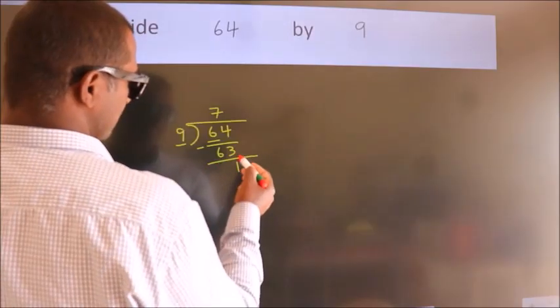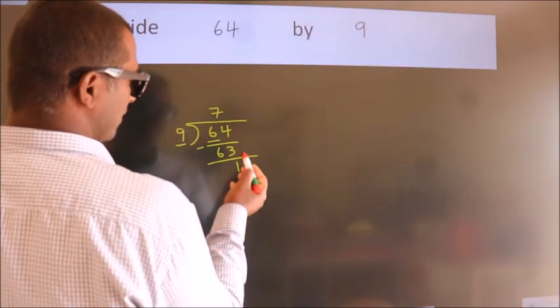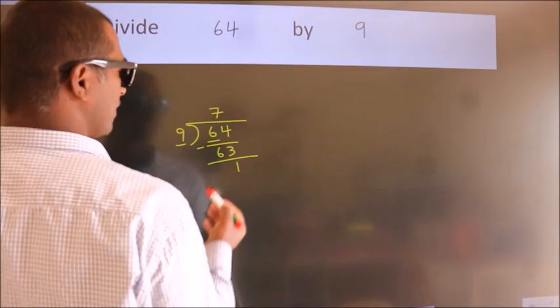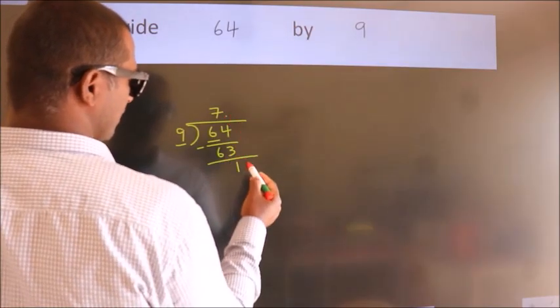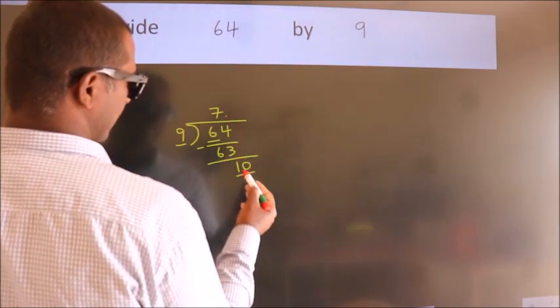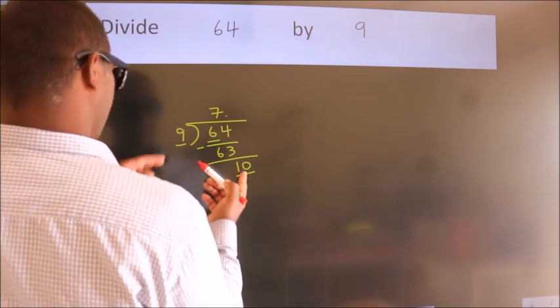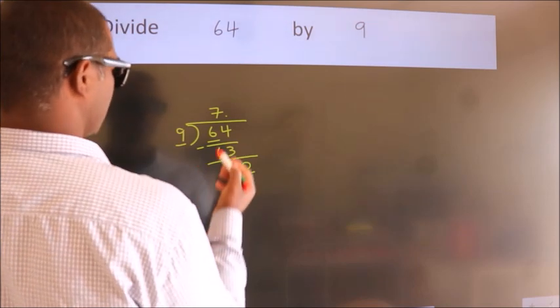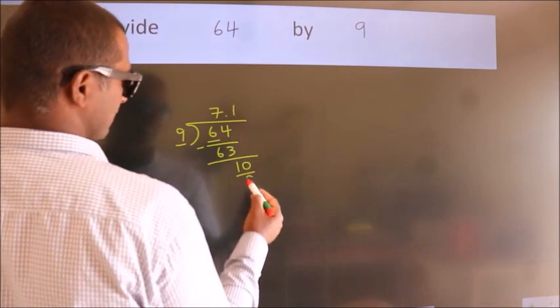After this, no more numbers to bring down. So what we do is put a dot and take 0. So, 10. A number close to 10 in the 9 table is 9 ones, 9.